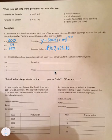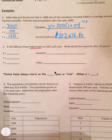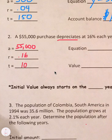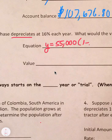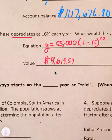For a decay problem: a $55,000 purchase depreciates at 16% each year — what is the value after 10 years? When you see 'depreciates,' think decay. The initial value is $55,000, the rate is 16% which is 0.16, and the time is 10 years. The equation is y equals 55,000 times (1 minus 0.16) to the 10th power, which gives $9,619.57 after 10 years.